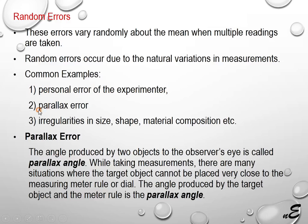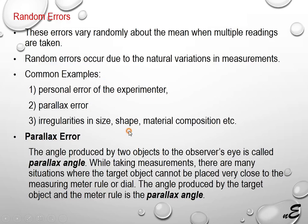Random errors also arise from irregularities in size, shape, material, and composition. Basically, random errors are natural errors. When an experimenter takes time, because of varying human reaction, the readings will vary. When taking readings repeatedly under the same conditions for the same measurement, the readings will vary because of random errors.